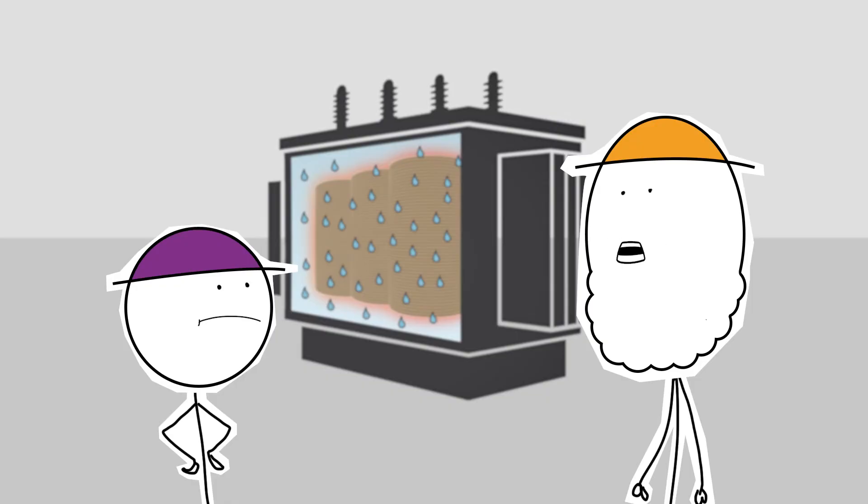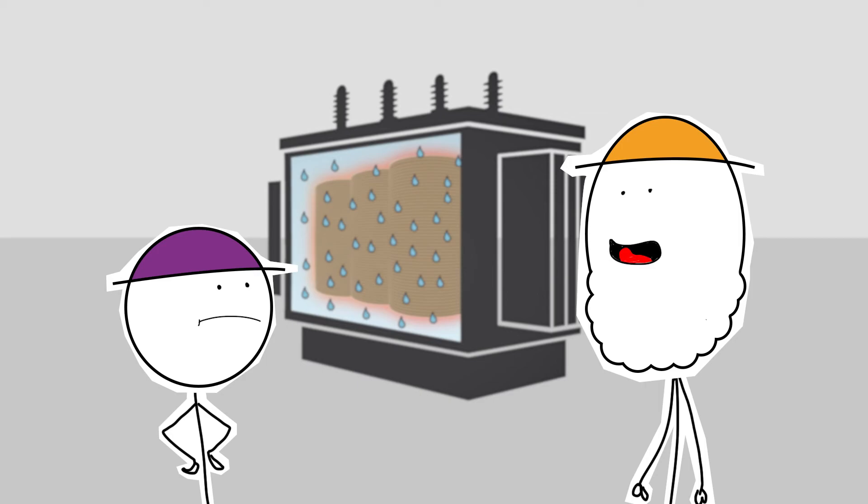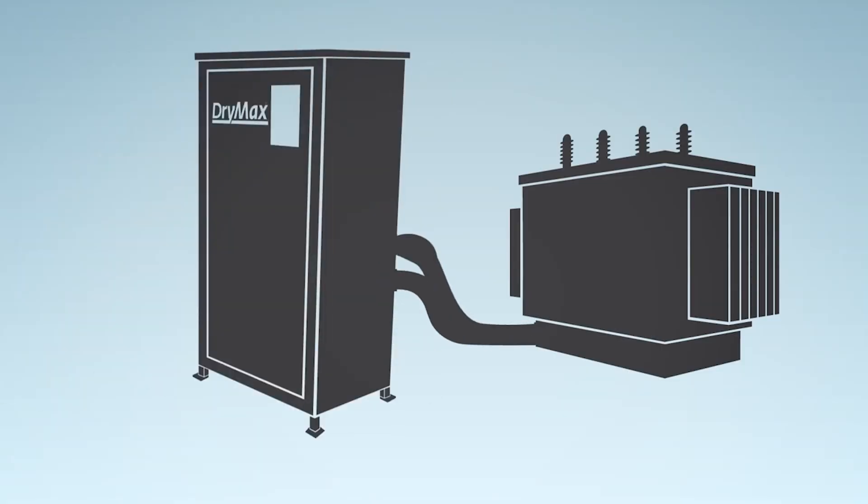How about a passive online dryer? Attach one of them bad boys to this transformer, and it'll catch all the water as it migrates to and from the solid insulation. That's the only way they'll get what they need.